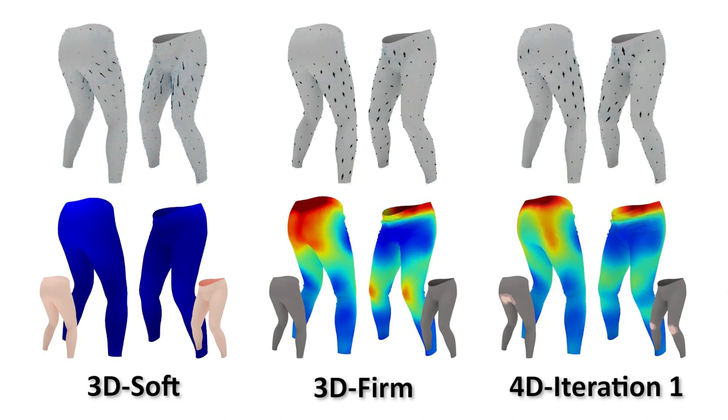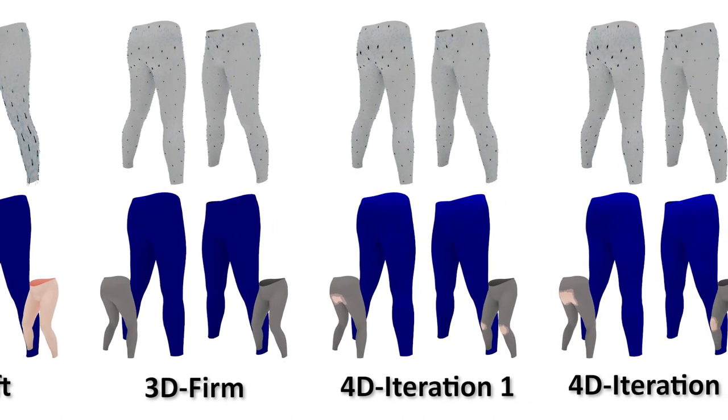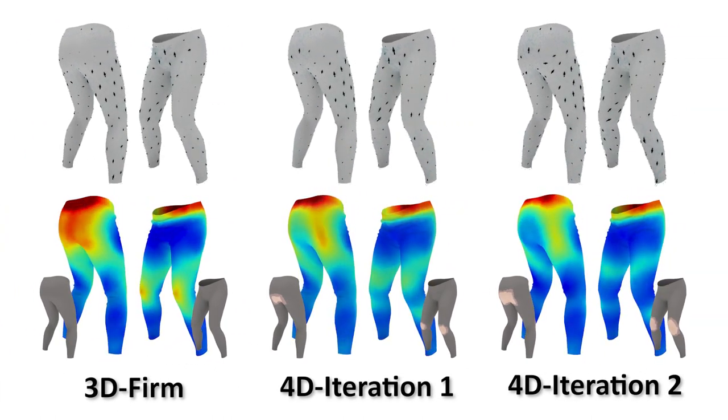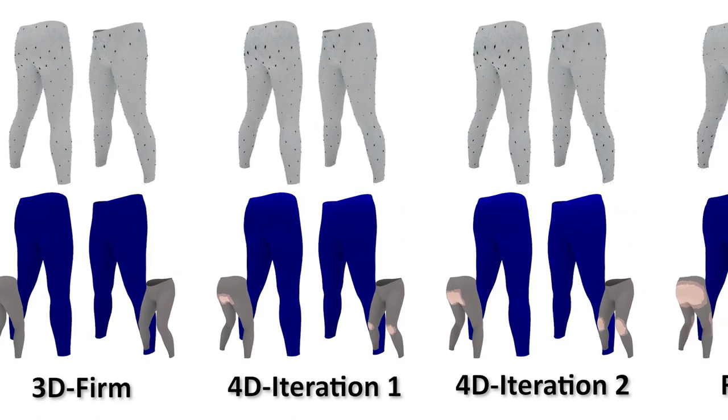Here we show the progressive material distribution of our leggings and long sleeve examples. By progressively enlarging the soft material regions, the stress can be effectively reduced while maintaining small sliding.